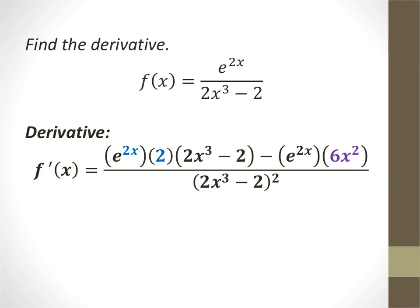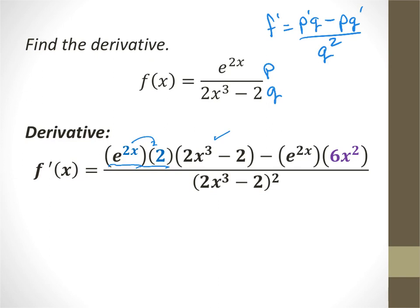This last one is a quotient rule — we can't simplify it, it's p over q. The derivative is p prime q minus p q prime, all over q squared. So we take the derivative of the numerator: e to the x, keep it as it is, chain rule out the derivative of the exponent, which is 2, times the denominator. Then the numerator, e to the 2x, times the derivative of the denominator: bring the 3 down, 3 times 2 is 6x squared, derivative of negative 2 is 0. All of that is over the denominator squared. Hope you did great. If not, go through this again as quickly as you possibly can.